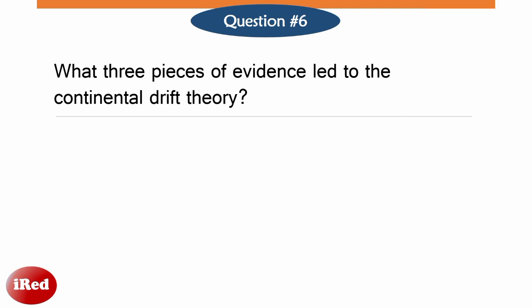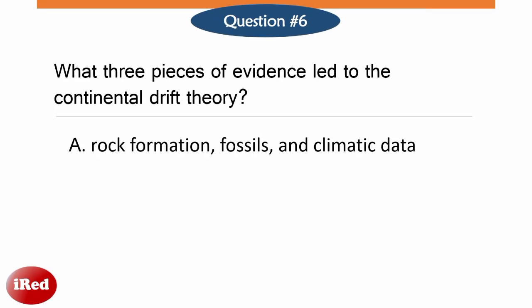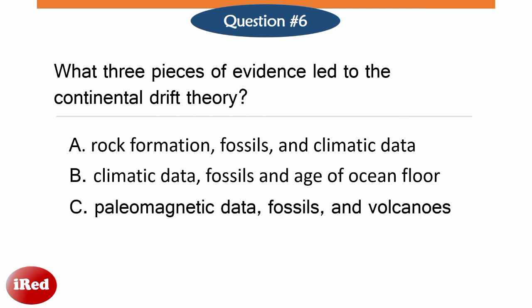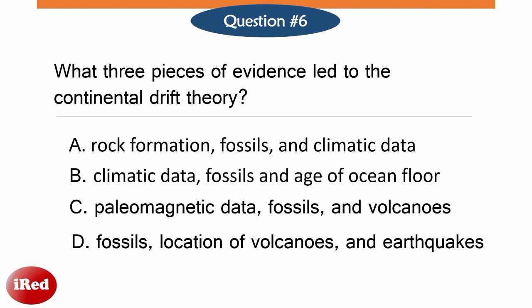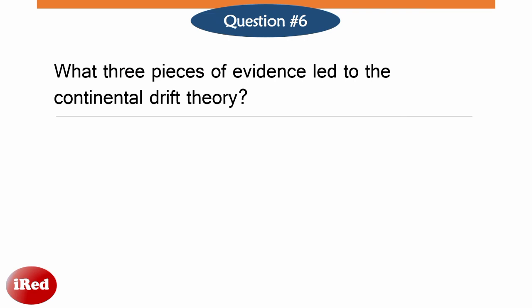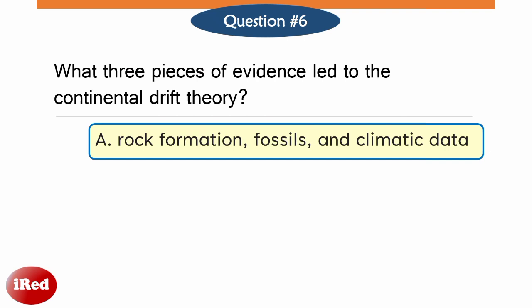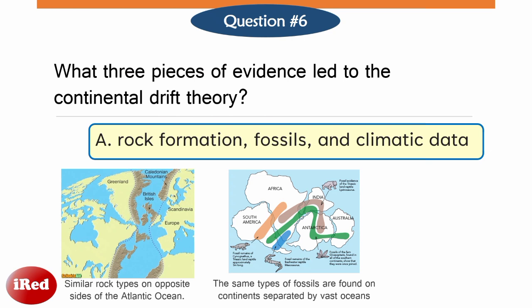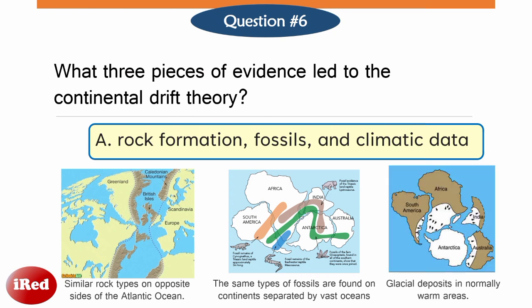What three pieces of evidence led to the Continental Drift Theory? Letter A: Rock formation, fossils, and climatic data. Letter B: Climatic data, fossils, and age of ocean floor. Letter C: Polymagnetic data, fossils, and volcanoes. Letter D: Fossils, location of volcanoes and earthquakes. The correct answer is letter A — rock formation, fossils, and climatic data. Similar rock types on opposite sides of the Atlantic Ocean, the same types of fossils found on continents separated by vast distances, and glacial deposits in normally warmer areas.